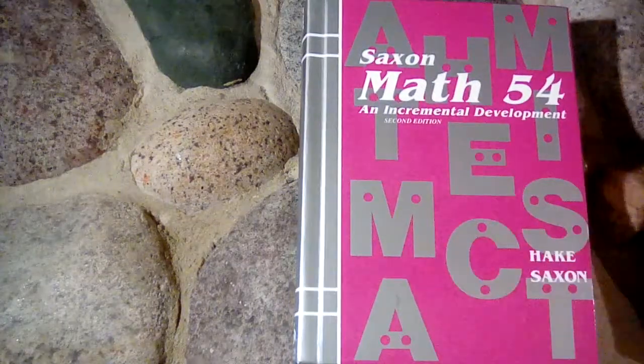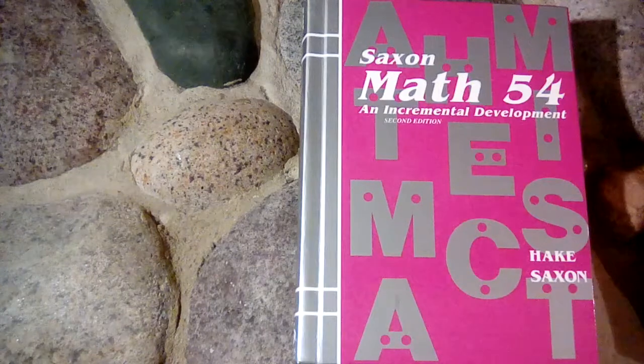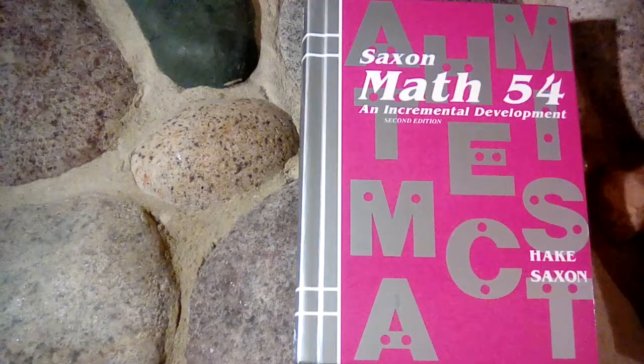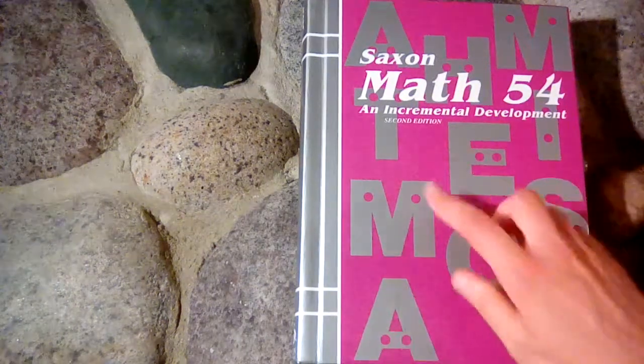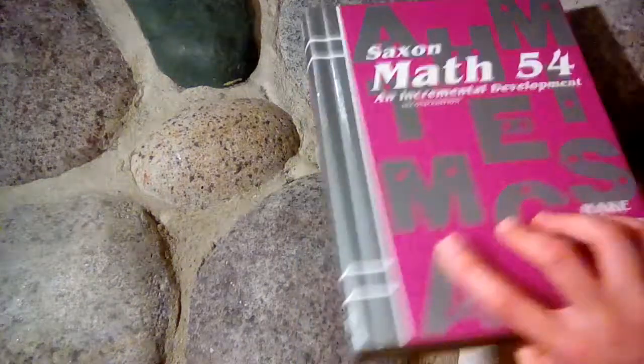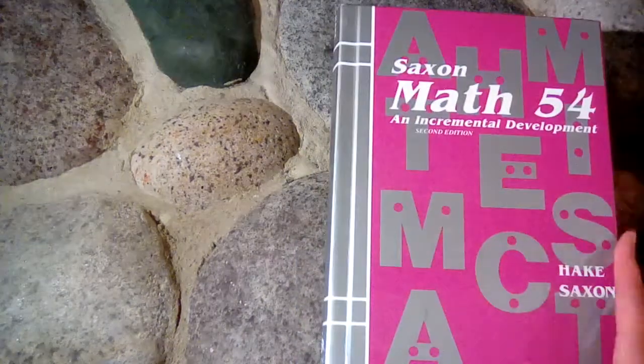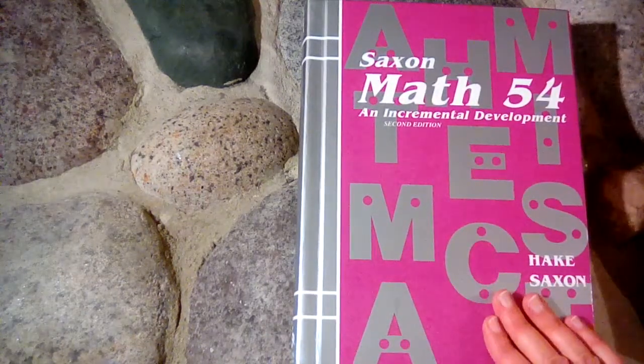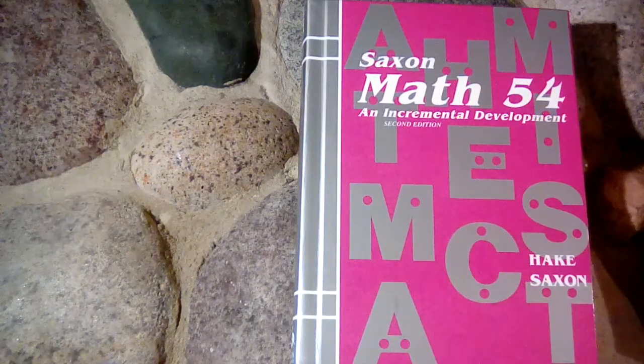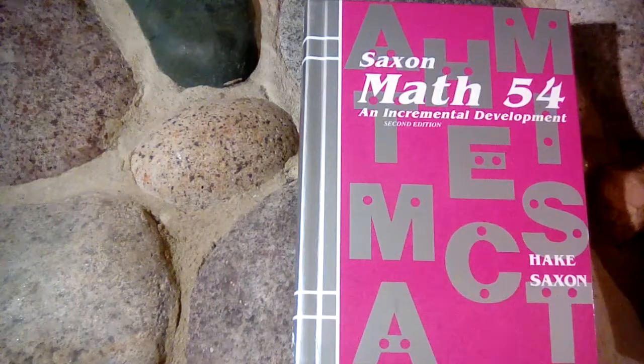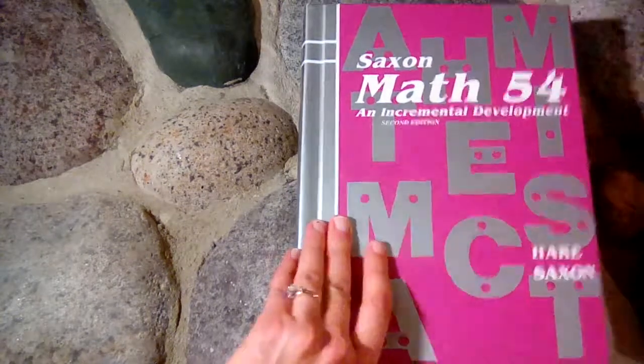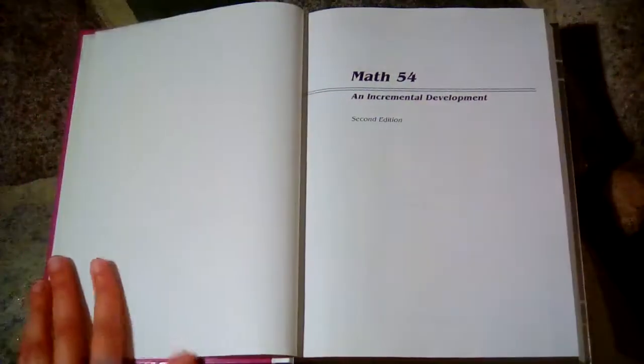The earlier ones are done by someone else, so you're going to see a big difference in all of the Saxon books from this point onward. This here is the second edition and the second editions are hardcover, sturdy, and people like the hardcovers because they can use them for all of their children and they just last a long time.